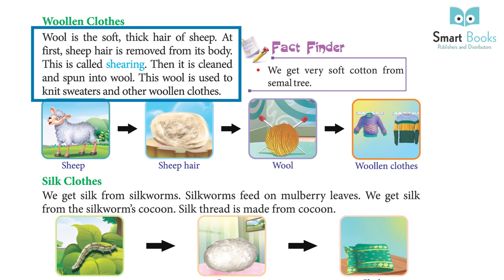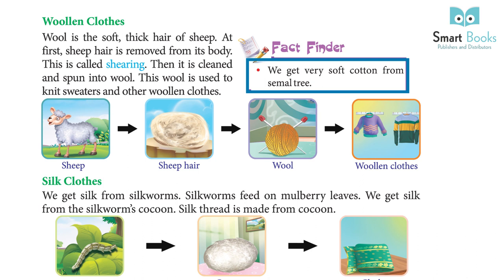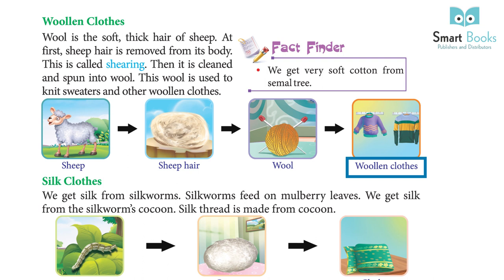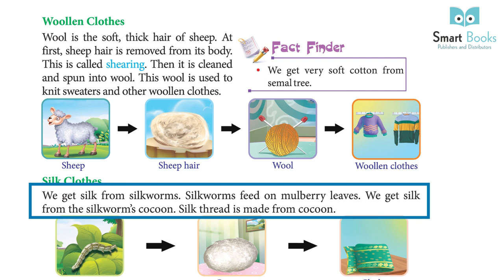After shearing, the wool is cleaned and spun into yarn. This yarn is used to knit sweaters and other woolen clothes. Fact finder: we get very soft cotton from the semal tree. Silk clothes: we get silk from silkworms. Silkworms are fed on mulberry leaves.